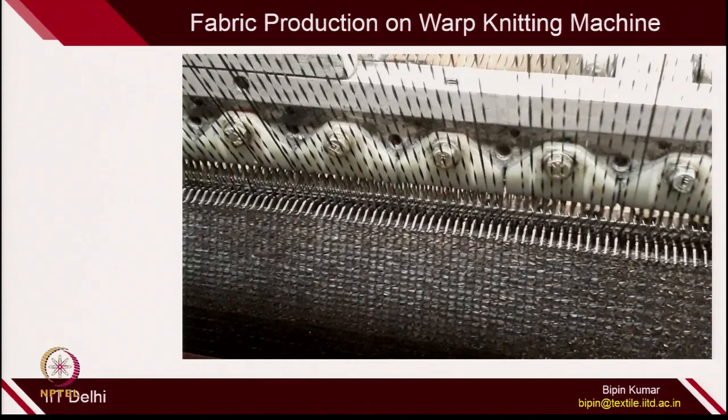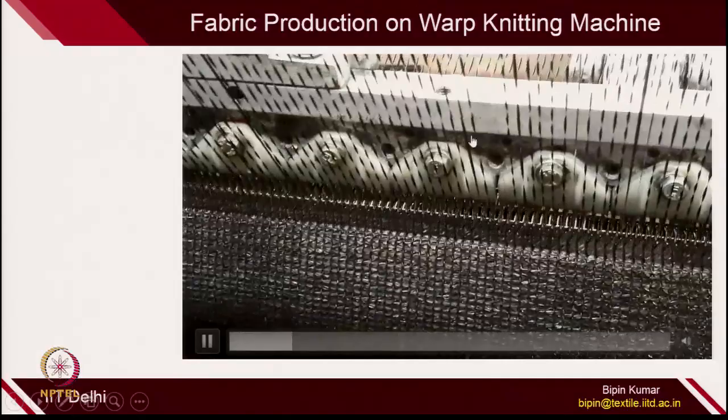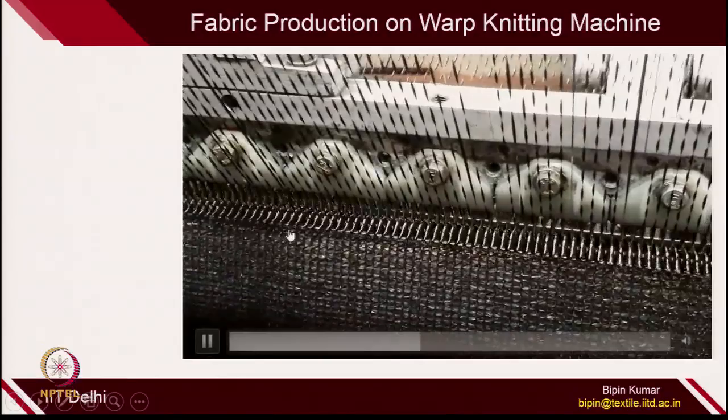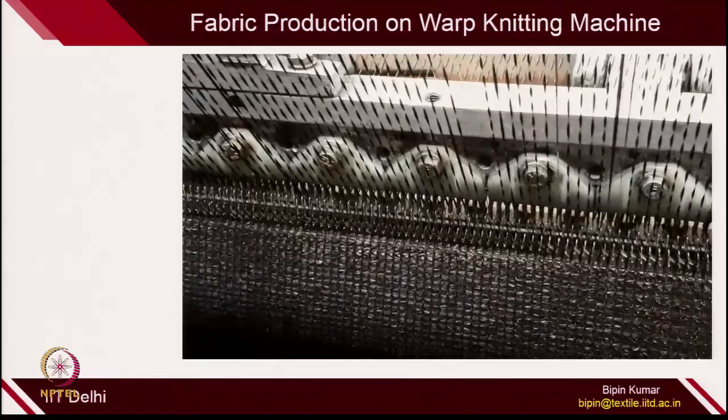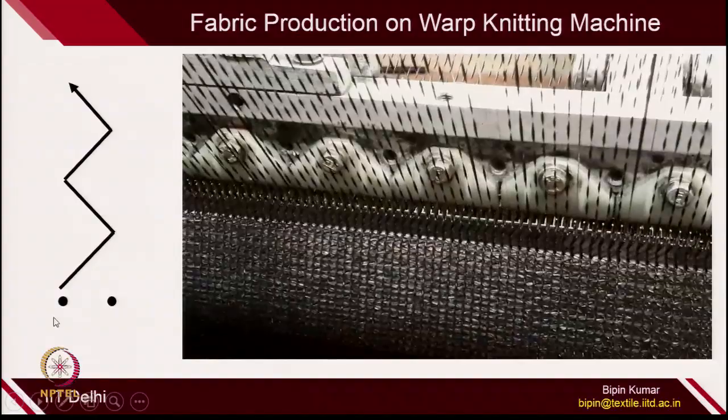This is the fabric production shown in slow motion. You can see the guide moves from left to right and then right to left, shifting laterally, changing the direction of yarn in every subsequent course. This is how guides are actually changing the direction of yarn in each course.